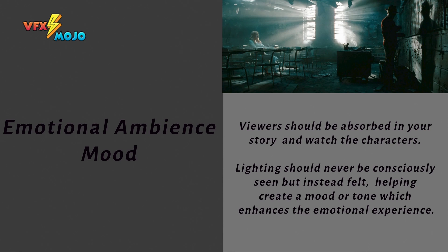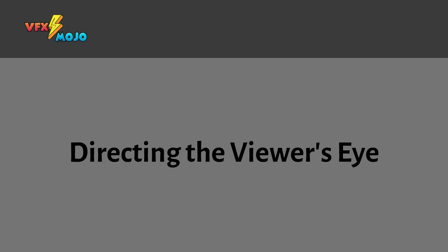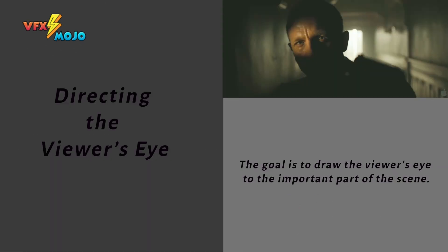It's also important to understand the emotional ambience or mood of a scene. Being able to identify the intended mood means you can make deliberate lighting choices to support the mood and story points. Sometimes this means not having much light in your scene, but rather using lights to create shapes or silhouettes.